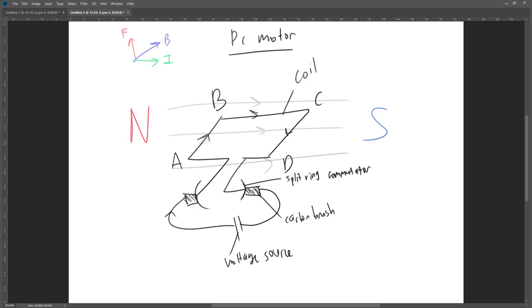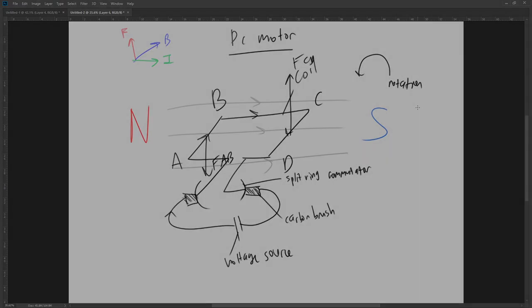Here is a simplified diagram of the DC motor. Current flows from A to D in the coil. Utilizing Fleming's left-hand rule, we see that a force acts downwards on AB and upwards on CD. These coupled forces cause a torque about the coil, causing it to rotate.